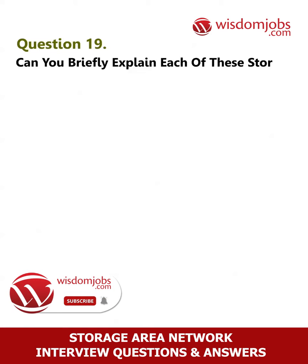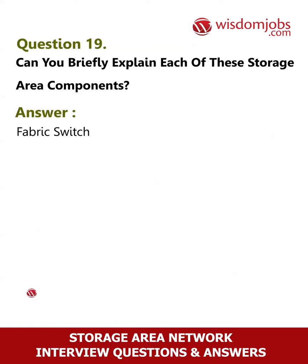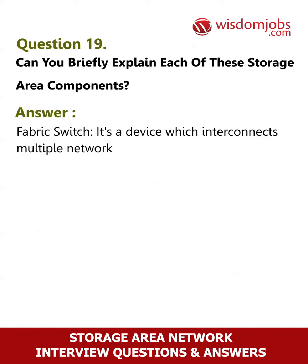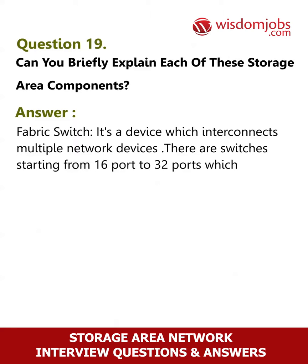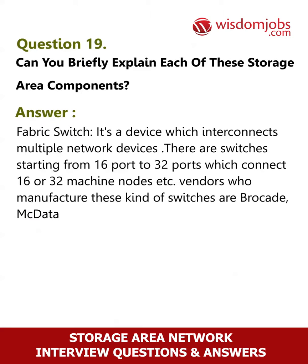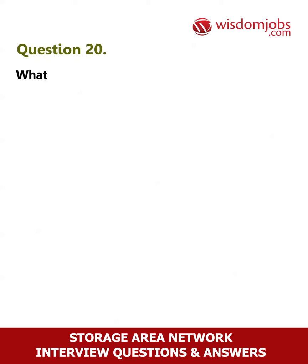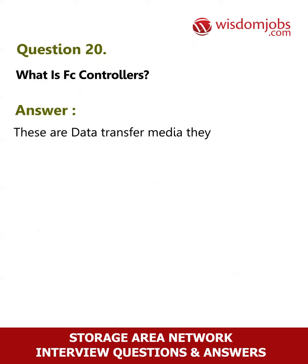Question 19: Can you briefly explain each of these storage area network components? Answer: Fabric Switch — it's a device which interconnects multiple network devices. There are switches starting from 16-port to 32-port, which connect 16 or 32 machine nodes. Vendors who manufacture these kinds of switches are Brocade and McData. Question 20: What is FC controllers? Answer: These are data transfer media.